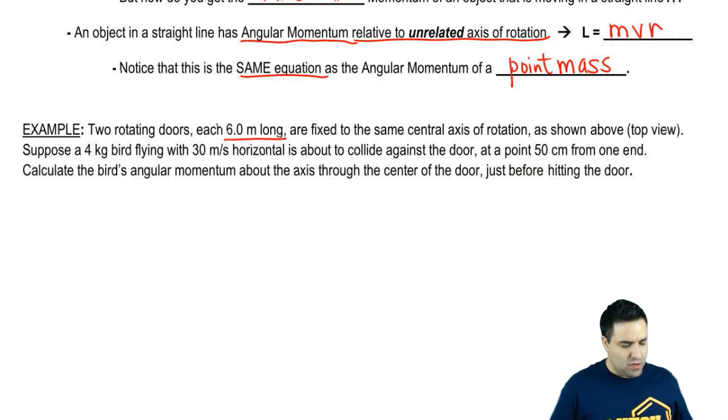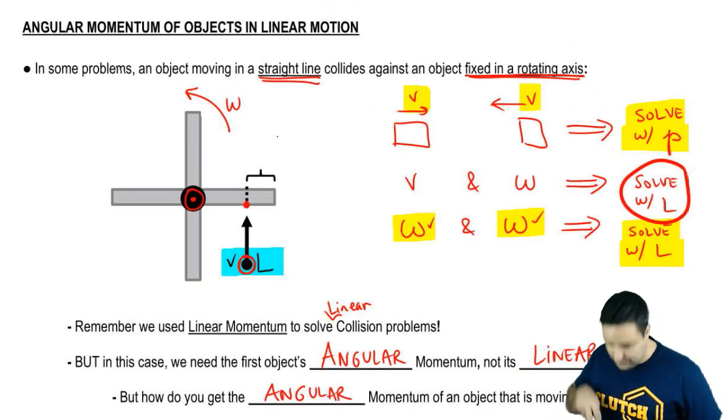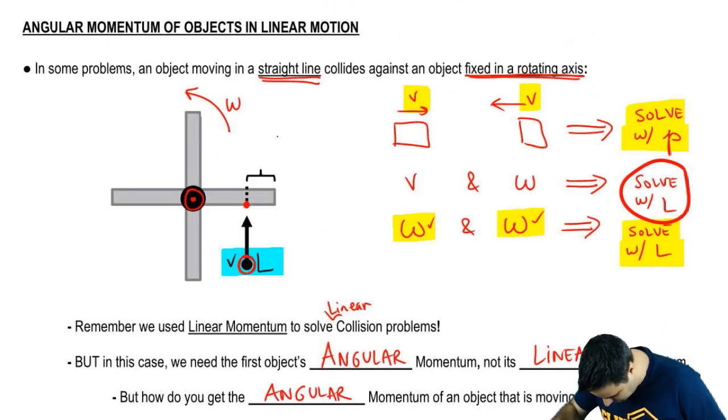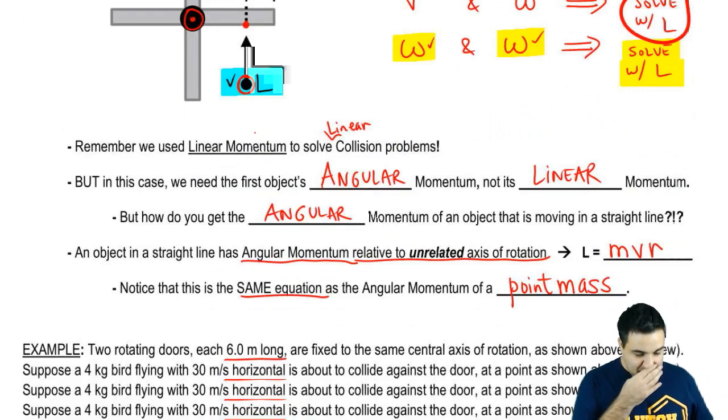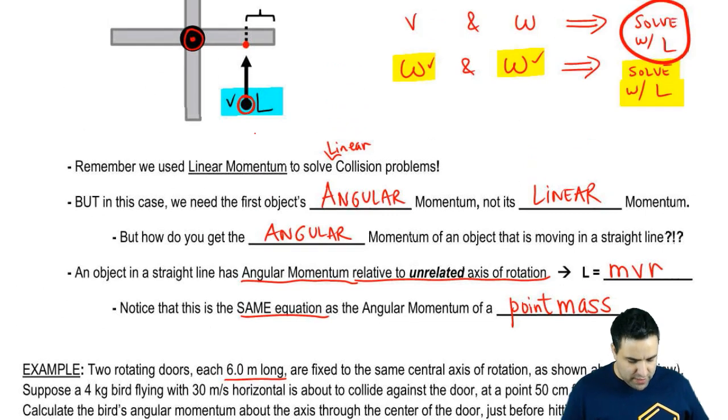Two rotating doors, each six meters long, are fixed to the same central axis of rotation as shown above. This is a top view, which means you are looking down into the doors and you see them from the top. Suppose a four kilogram bird, so the mass of this guy here is four kilograms.